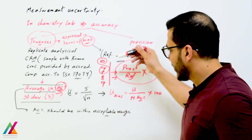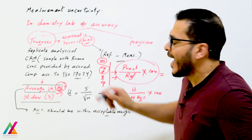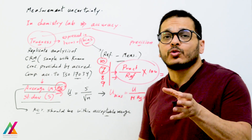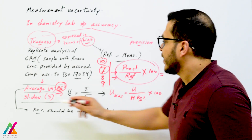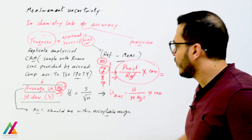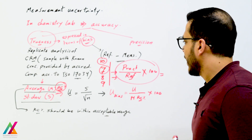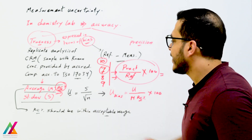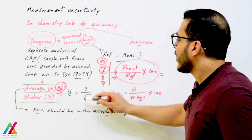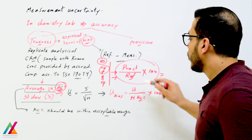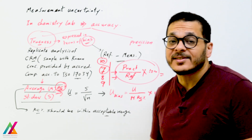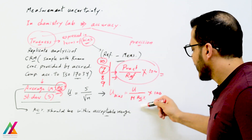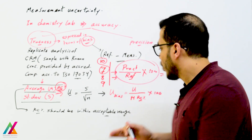From the 6 to 10 results, you calculate the average of recoveries, which must also be within the acceptable range. You then calculate the standard deviation across all results, and from this the standard uncertainty: standard uncertainty equals standard deviation divided by the square root of n (number of replicates). Finally, uncertainty due to bias equals standard uncertainty divided by the average of recoveries, multiplied by 100.